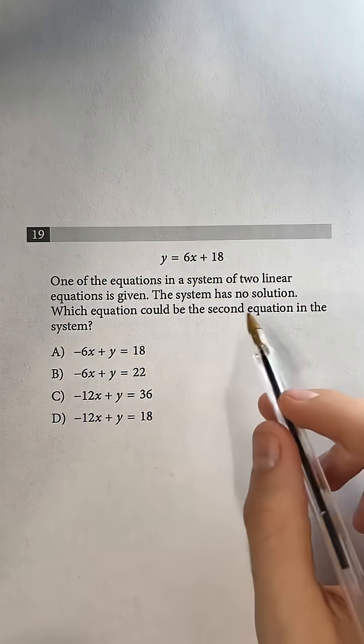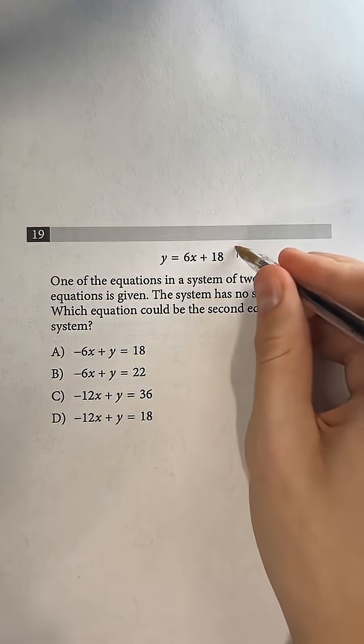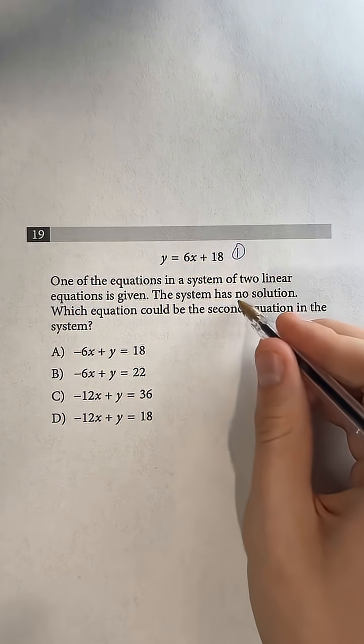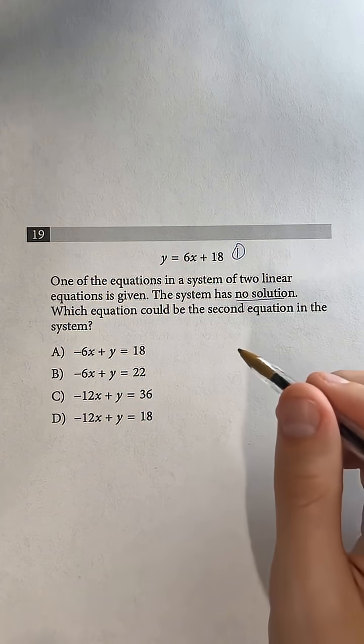Question 19. One of the equations in a system of two linear equations is given. So that is this one up here. The system has no solution. Which equation could be the second equation in the system?